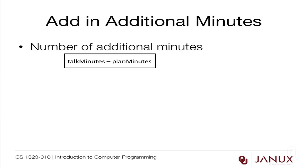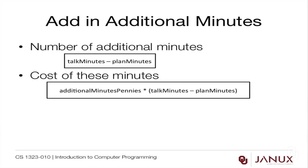Now let's add in the additional minutes. The number of additional minutes is talk_minutes minus plan_minutes. The cost of those minutes is additional_minutes_pennies times (talk_minutes - plan_minutes). Notice the parentheses around talk_minutes minus plan_minutes — they are necessary because multiplication has higher precedence than subtraction. Without the parentheses, additional_minutes_pennies would only multiply talk_minutes, and the subtraction of plan_minutes wouldn't happen correctly, which would be a problem.